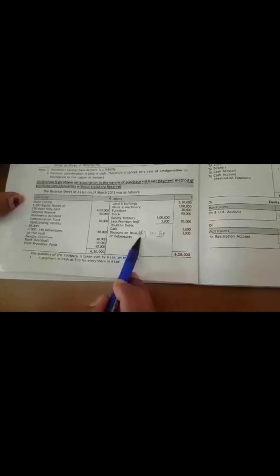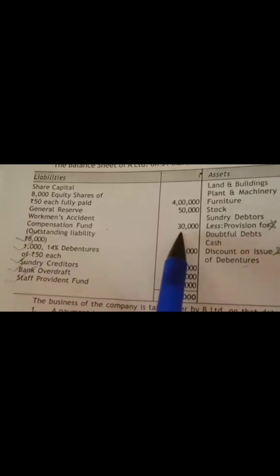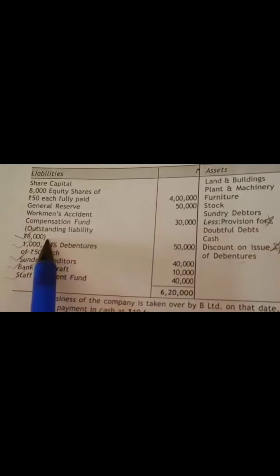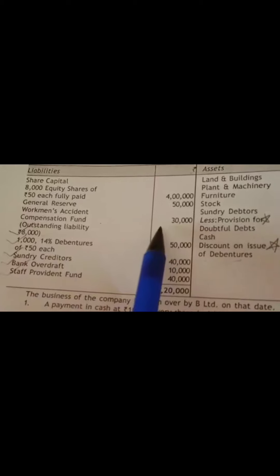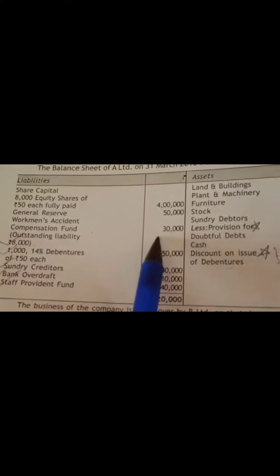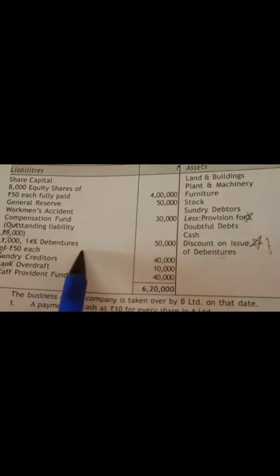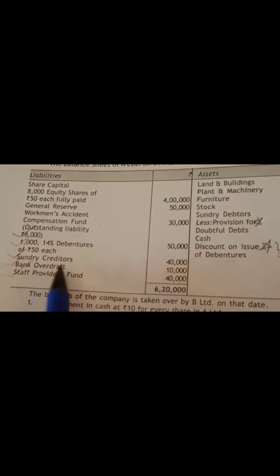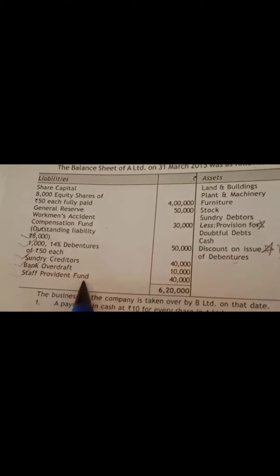Coming to the liability side of the balance sheet, you have share capital — Rs. 50 each fully paid — general reserve, workman's accident compensation fund. Here you have an outstanding liability of Rs. 8,000. This Rs. 8,000 should be taken as a liability, and the remaining amount of Rs. 30,000 minus Rs. 8,000 should be transferred to equity shareholder's account. Then you have 14% debentures, sundry creditors, bank overdraft, and staff provident fund.